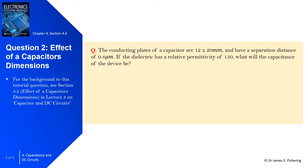Moving on to question 2, we'll look at the effect of the capacitor's dimensions. The conducting plates of a capacitor are given by the dimensions of 12 multiplied by 20 millimetres. Be aware this isn't an SI unit so we need to convert to metres by multiplying by 10 to the power minus 3. These have a separation distance of 0.8 micrometres.